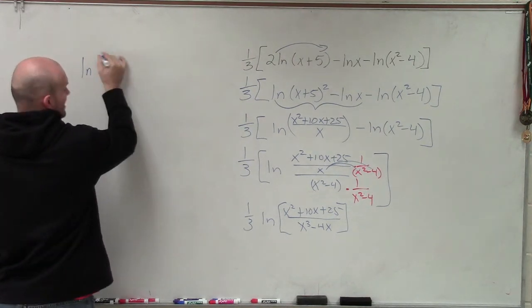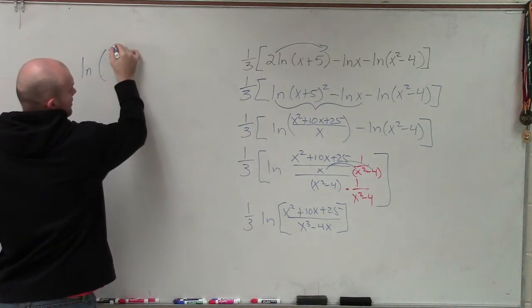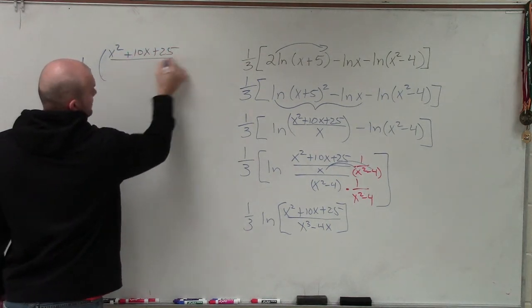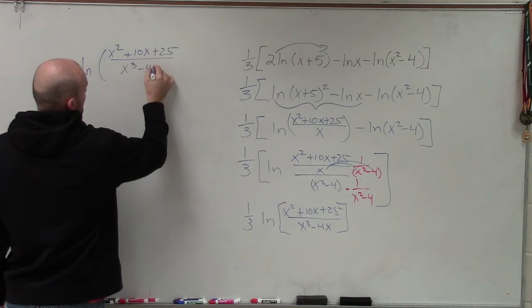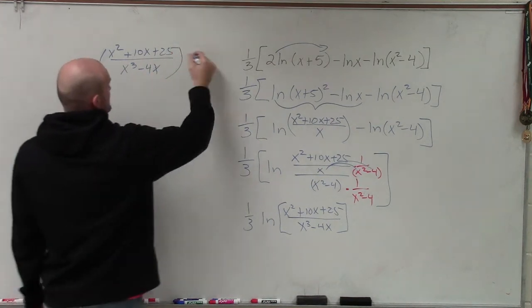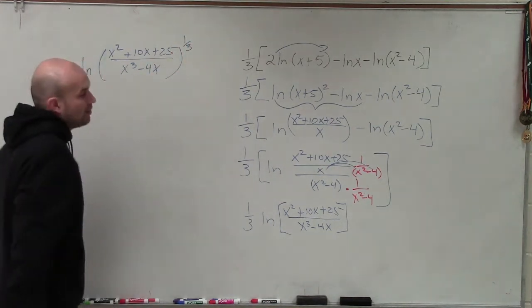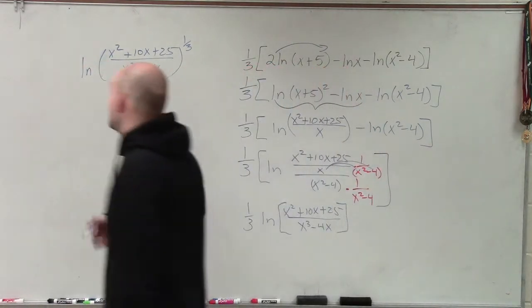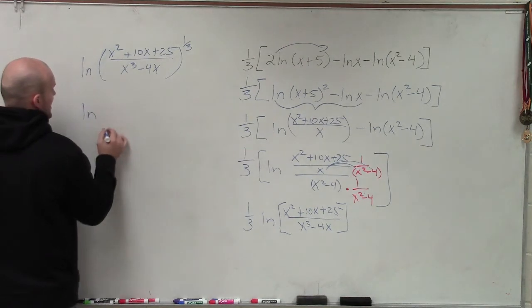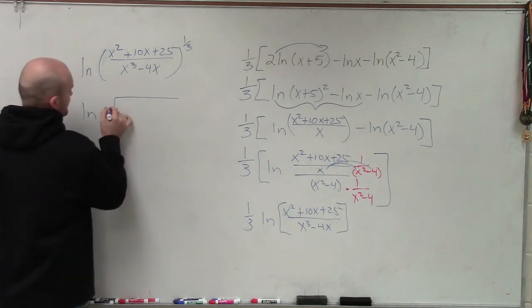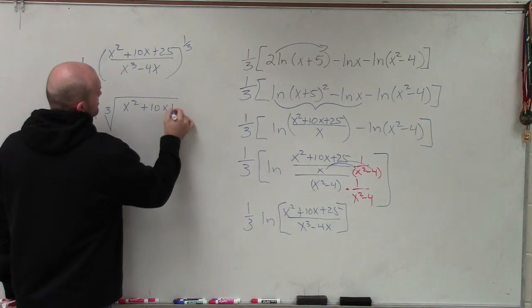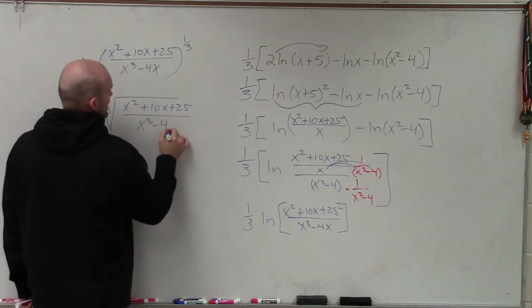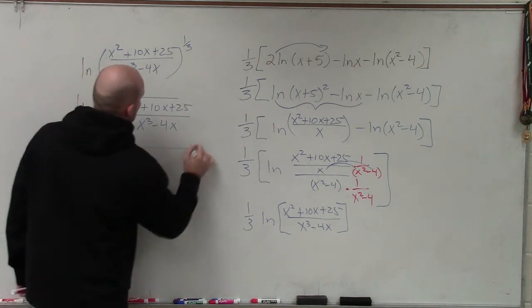Let's write it out one more time. So it would be ln of x squared plus 10x plus 25 divided by x cubed minus 4x raised to the 1 third power. Well, when I have that raised to the 1 third power, what I can do is I can rewrite that as my cube root. So my final solution would be ln of the cube root of x squared plus 10x plus 25 divided by x cubed minus 4x. So there you go, ladies and gentlemen.